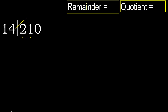But not greater. 14 multiplied by 2 is 28, which is greater. 14 multiplied by 1 is 14, which is not greater. OK, subtract: 21 minus 14 equals 7.